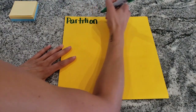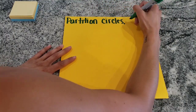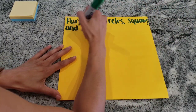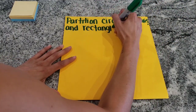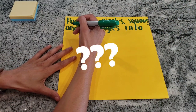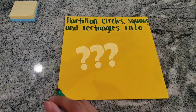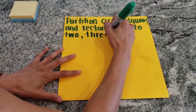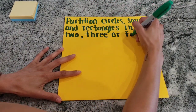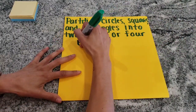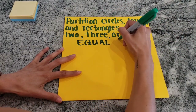Today, we are going to partition circles, squares, and rectangles into two, three, or four equal shares.